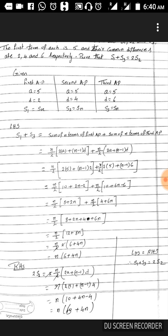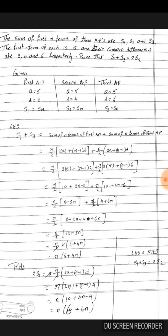And the RHS part, 2s2, 2 into sum of n terms of the second AP. So only the difference is the d: n by 2 times 2a plus n minus 1 into 4. So by calculating this one also, we got n by 2 times 6 plus 4n.